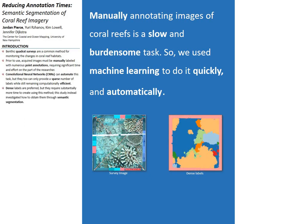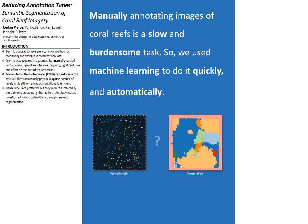Densely labeled images are the ideal format because they can provide researchers with a more accurate view of the changes that occur in the habitat, but unfortunately they require significantly more time to make. Thus, this research investigated how dense labels could be obtained with the help of machine learning algorithms.